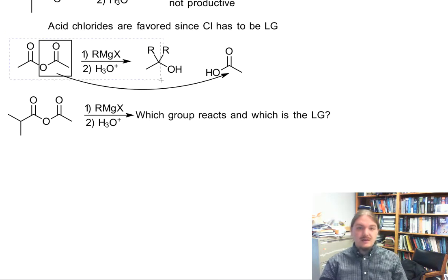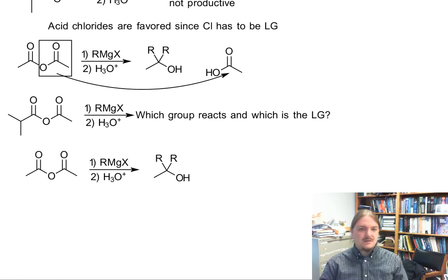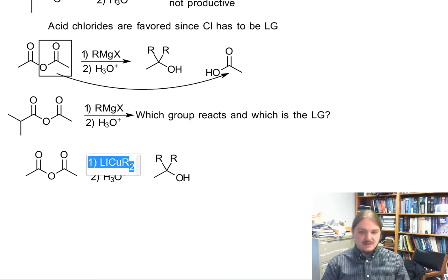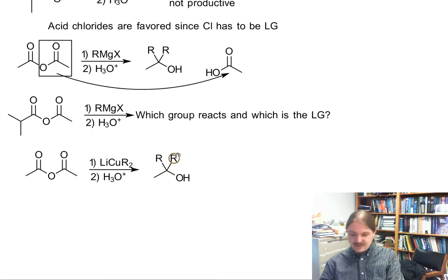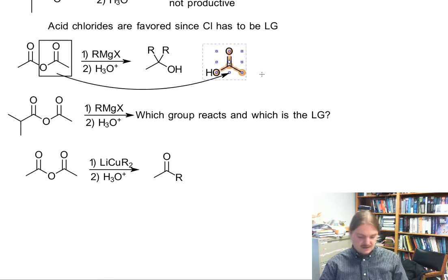Similarly, it's worth noting that some people report that we get reactions with lithium dialkyl cuprates, or the Gilman reagents, to form ketones instead of alcohols, though we still get one side of the anhydride coming off as a carboxylic acid after neutralization.